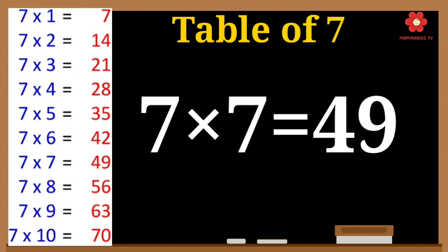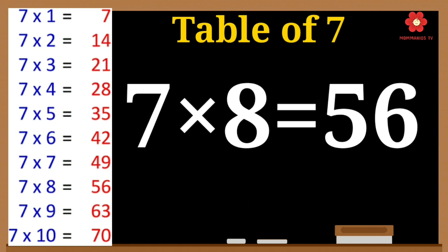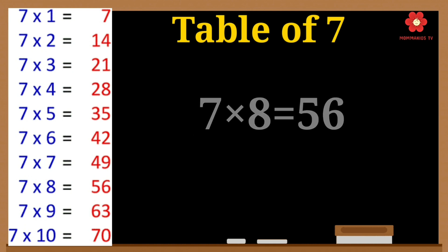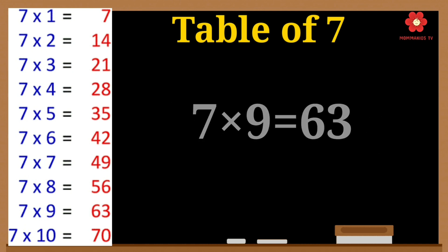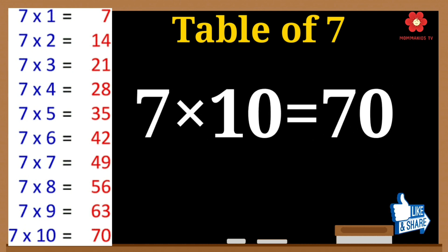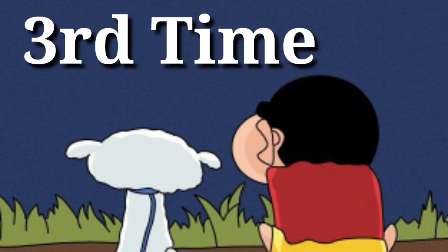7 7's are 49. 7 7's are 49. 7 8's are 56. 7 8's are 56. 7 9's are 63. 7 9's are 63. 7 10's are 70. 7 10's are 70.